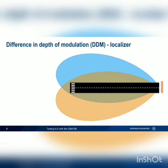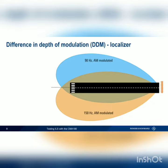Both lobes of the localizer are AM modulated — the left lobe at 90 Hz and the right lobe at 150 Hz. The modulation depth of each lobe is different depending on our position within the lobe. On the runway centerline, both lobes have the same AM modulation depth of 20%. As we move to the right of the centerline, the AM modulation depth of the 150 Hz lobe increases, and the AM modulation depth of the 90 Hz lobe decreases.